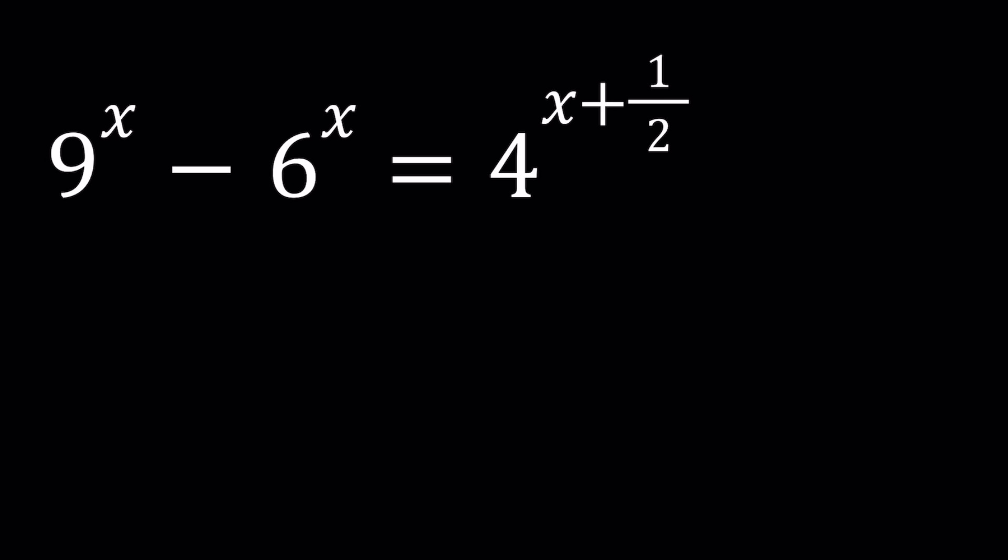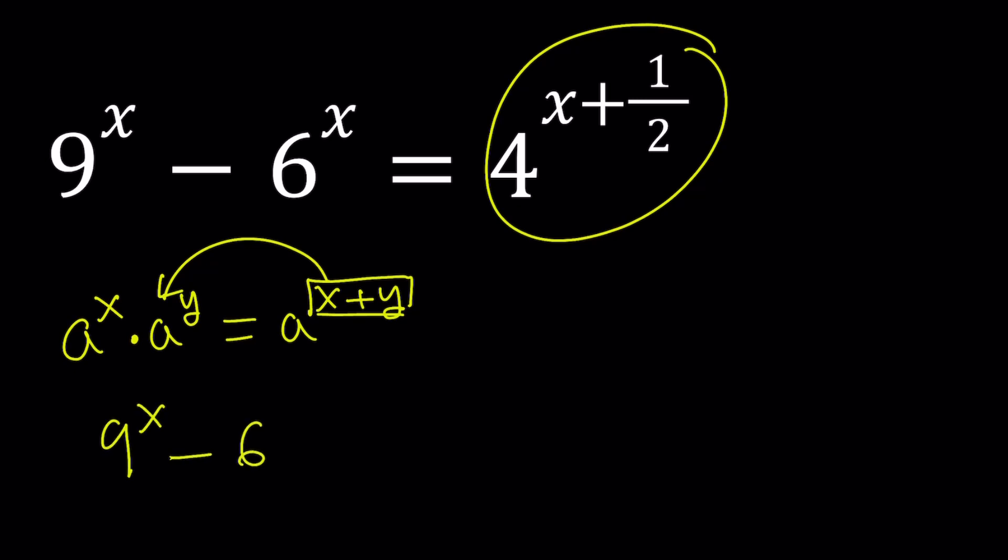Let's go ahead and simplify the right hand side a little bit first. When you have two exponents that are being added, something like a^x times a^y can always be written as a^(x+y) and vice versa. So if the exponents are being added, we can split that up into a product. So 9^x - 6^x = 4^x multiplied by 4^(1/2).